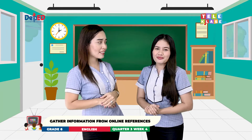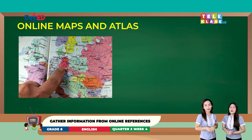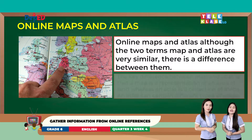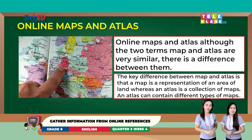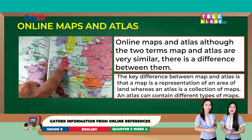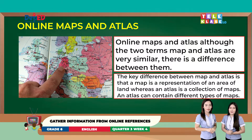How about online maps and atlas? Although the two terms maps and atlas are very similar, there is still a difference between them. The key difference between a map and an atlas is that a map is a representation of an area of land, whereas an atlas is a collection of maps. An atlas can contain different types of maps.